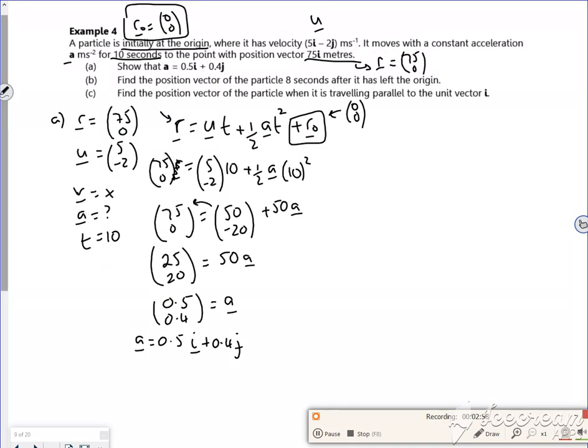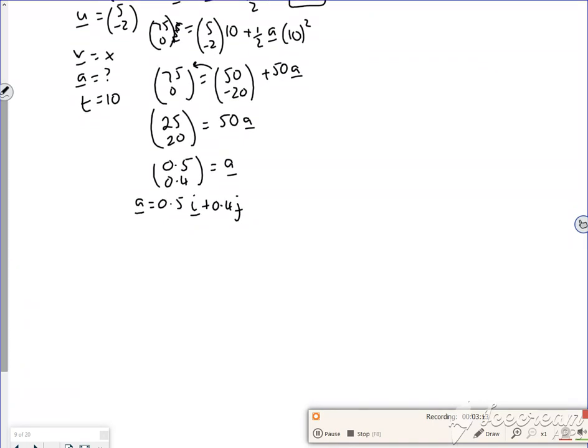Like I said, I could have stuck with s there, because the initial position is just the origin anyway. But it's nice just to realize that there are r equations in there. Part b then. So part b says, find the position vector 8 seconds after it's left the origin.